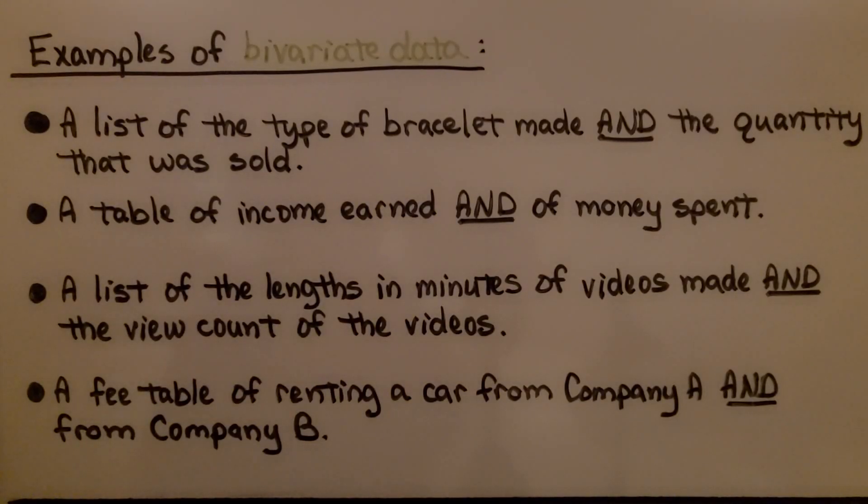Here are some examples of bivariate data: a list of the type of bracelet made and the quantity that was sold, a table of income earned and of money spent, a list of the lengths in minutes of videos made and the view count of the videos, or a fee table of renting a car from company A and from company B.